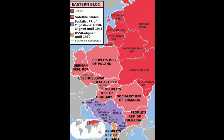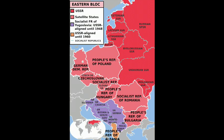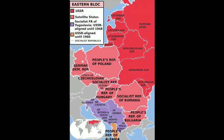The Slavic people are a group of several different ethnic and linguistic groups which mostly reside in Eastern Europe. Eastern Slavs include Russians, Ukrainians, and Belarusians. Western Slavs include Poles, Czechs, and Slovaks. The Southern Slavs are the Serbs, Croats, Bosnians, Slovenes, Macedonians, Montenegrins, and Bulgarians.